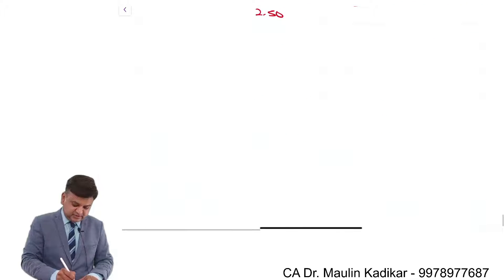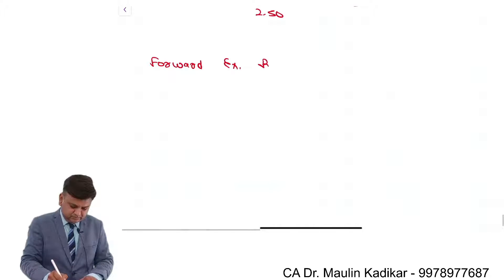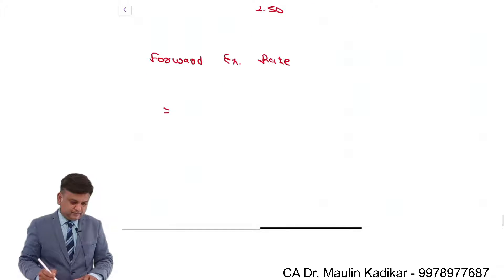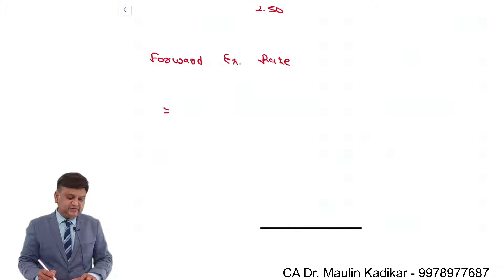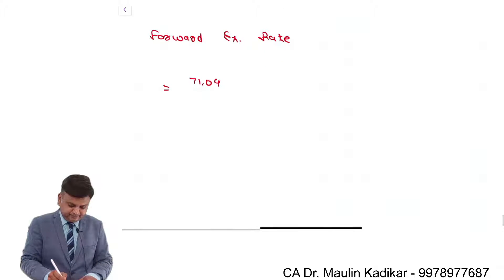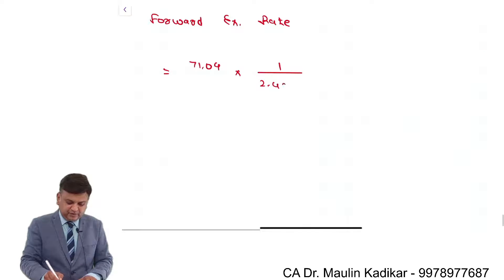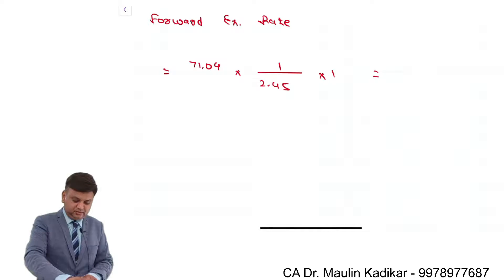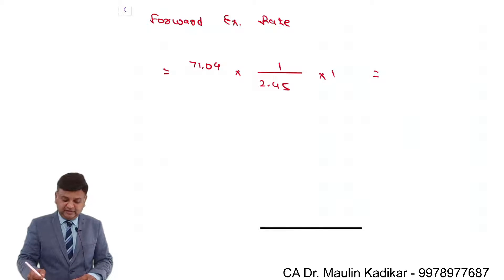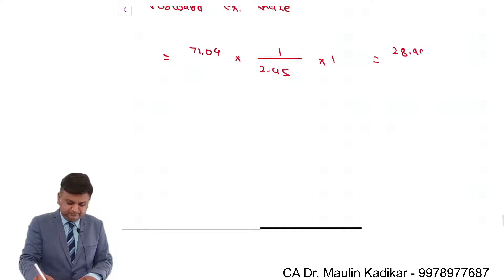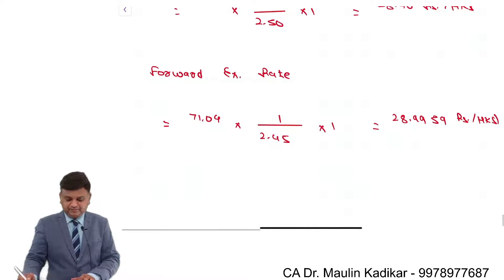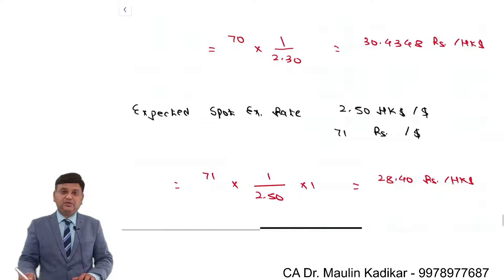The last one is the forward exchange rate. The forward rate is 71.04 rupees per dollar and 2.45 HKD per dollar. So the calculation is 71.04 multiplied by 1 divided by 2.45, which gives 71.04 divided by 2.45 equals 28.9959 rupees per Hong Kong dollar. This is the way we compute the cross exchange rates.